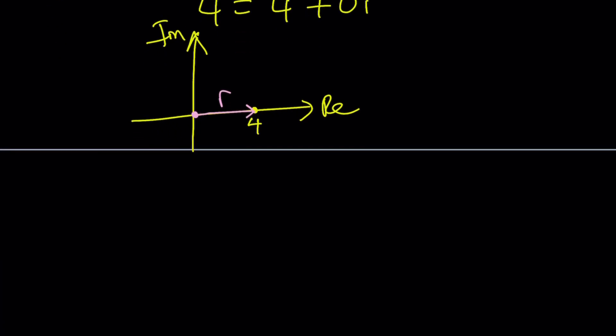We also need to worry about the theta, the angle the number makes. So if you have a number like this, then there's an angle theta. But in this case, since our number, the vector, coincides with the real axis, then the angle between them will be 0. Make sense? We can go ahead and graph this on the complex plane with the real part and the imaginary part.